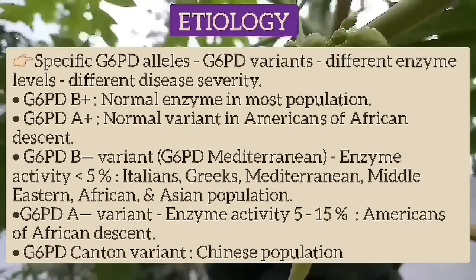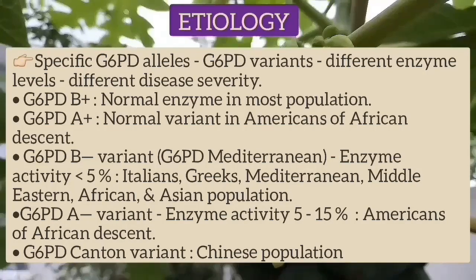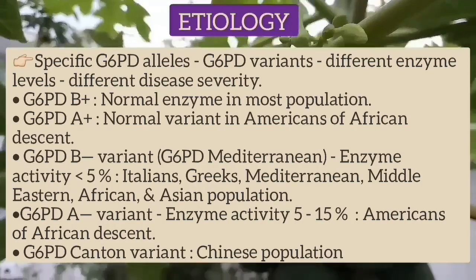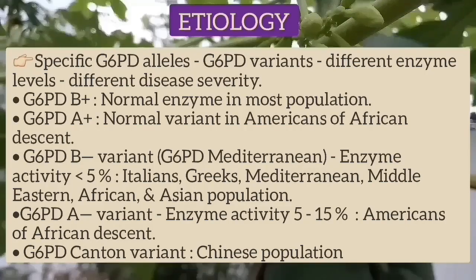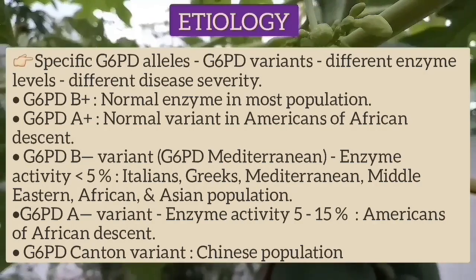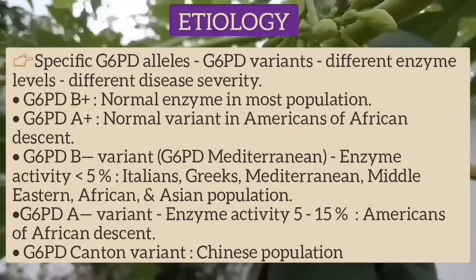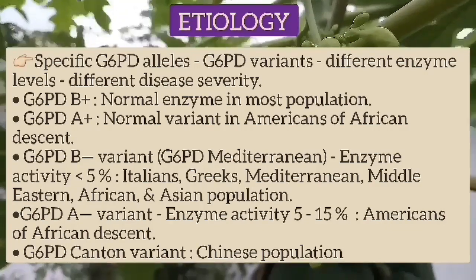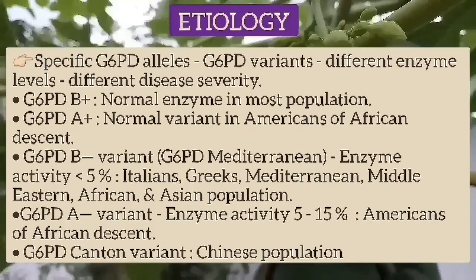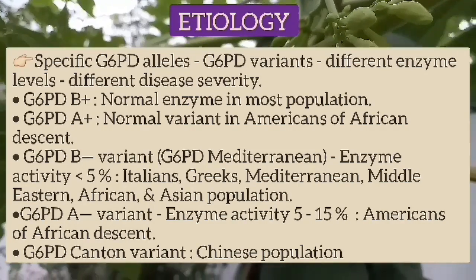Specific G6PD alleles are associated with variants of different enzyme levels, resulting in different degrees of clinical disease severity. G6PD B-plus is the normal enzyme in most populations, while G6PD A-plus is a normal variant in Americans of African descent. G6PD B-minus, also known as G6PD Mediterranean, is the most severe variant, with G6PD activity of less than 5% of normal in homozygous females or hemizygous males. It occurs at high frequency in Italians, Greeks, Mediterranean, Middle Eastern, African, and Asian groups. G6PD A-minus variant occurs in Americans of African descent, and G6PD Canton variant occurs in the Chinese population with markedly reduced enzyme activity.